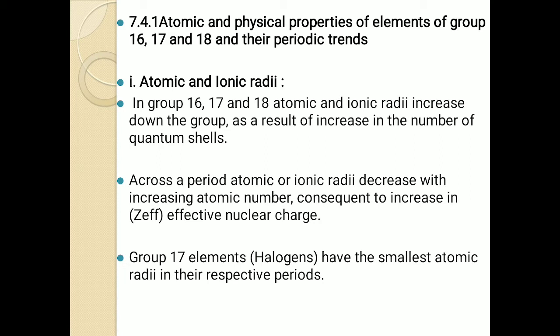Atomic and ionic radii can be defined as the distance between the center of the nucleus and the last shell. The periodic trend: as we move down the group from top to bottom, there is an increase in atomic and ionic radii as there is addition of a new shell every time. Across a period, moving from left to right, atomic and ionic radii decrease with increase in atomic number and increase in effective nuclear charge. From this we conclude that group 17 elements — halogens — have the smallest atomic radii in their respective periods.